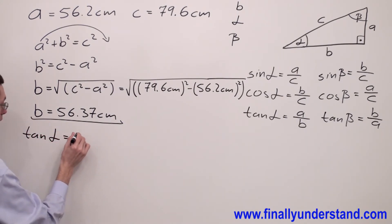So we have tangent alpha is equal to a over b.